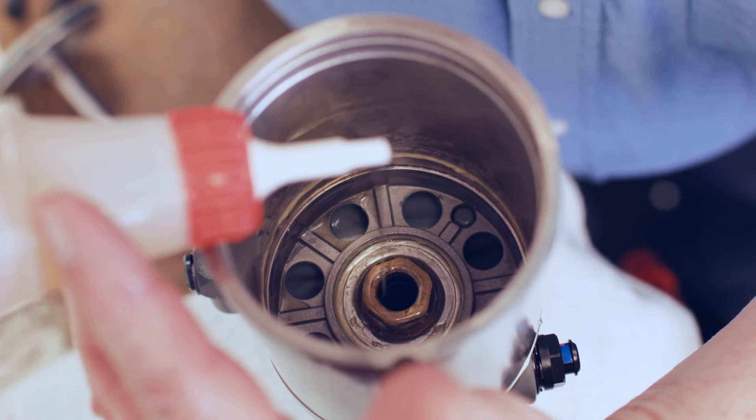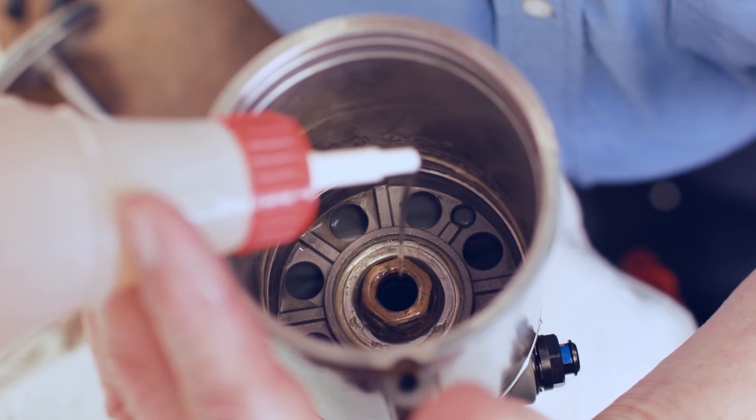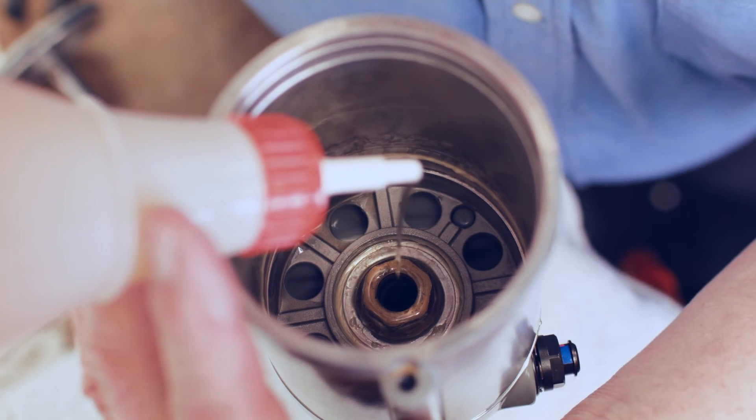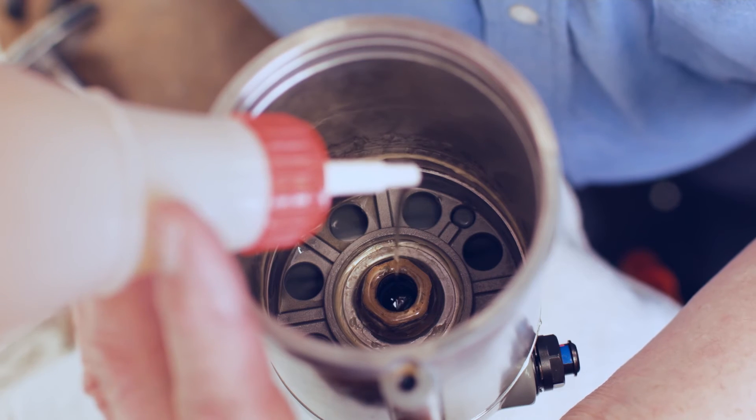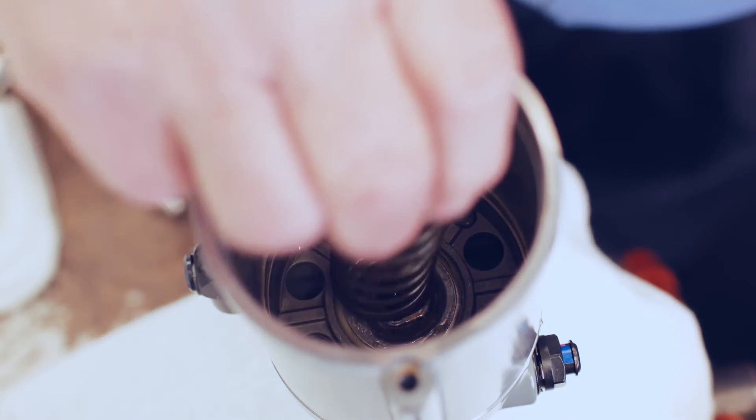Step eight, reinstall the plug on the top of the tool and reinstall tool in bench vise. Step nine, fill the gun with oil in the center hole until it appears full. Step 10, reinstall the spring, then piston.